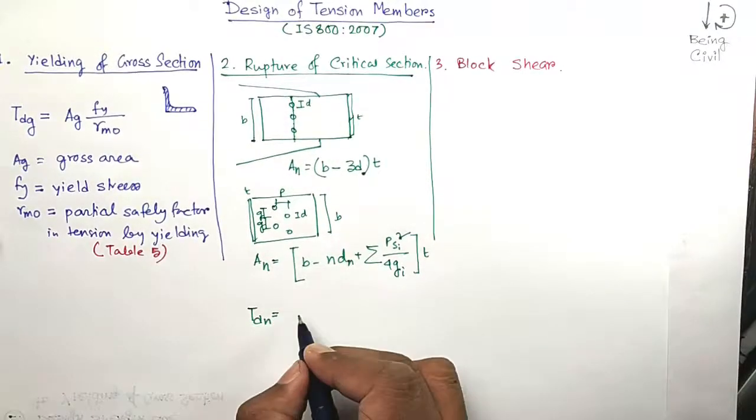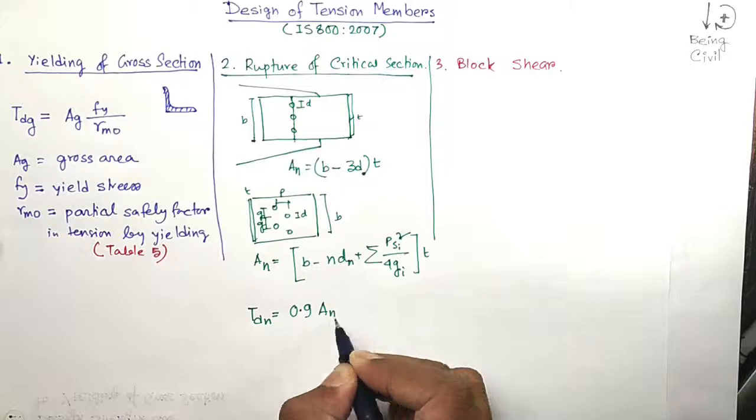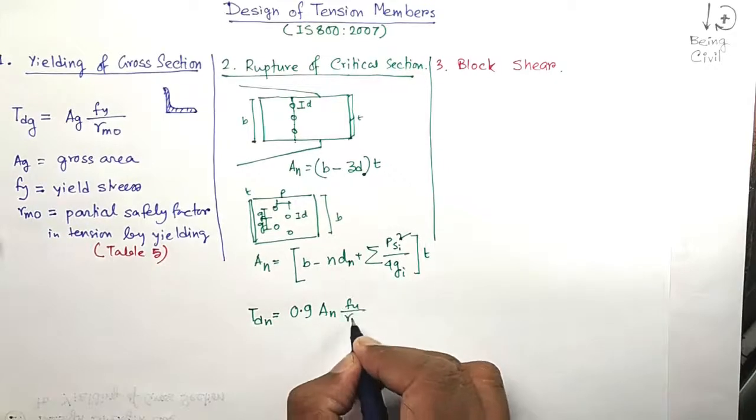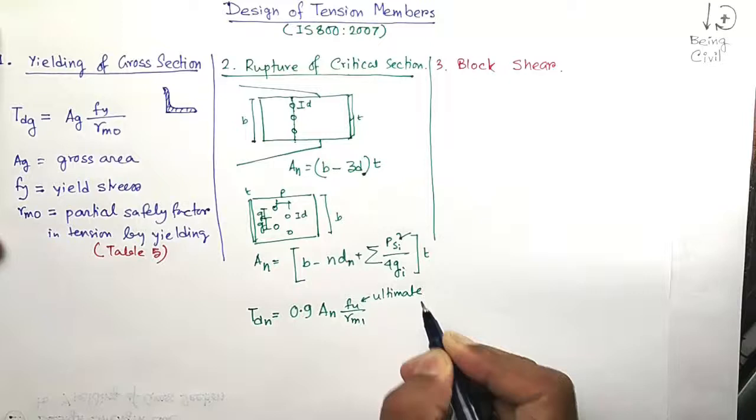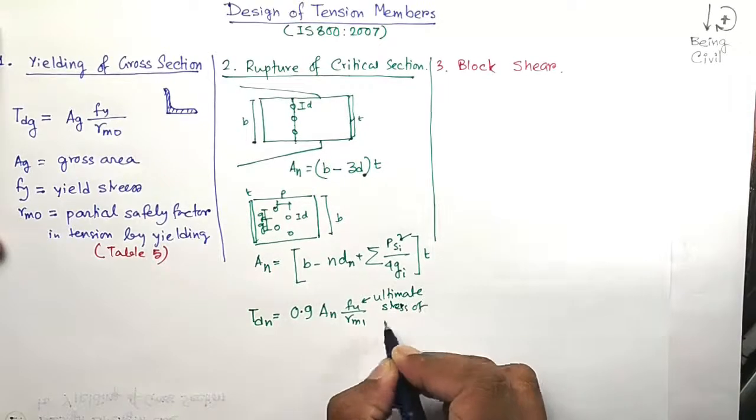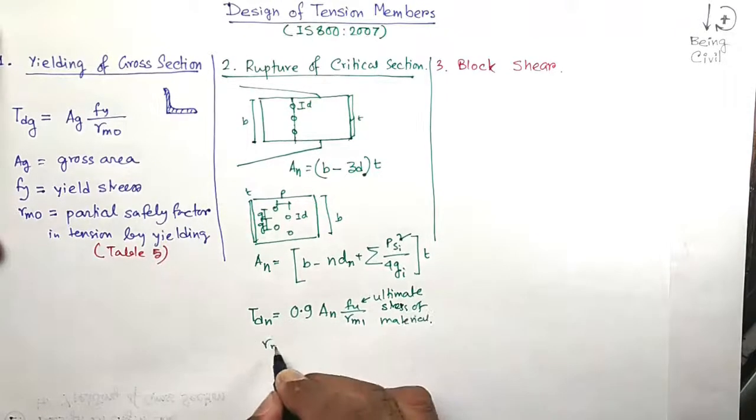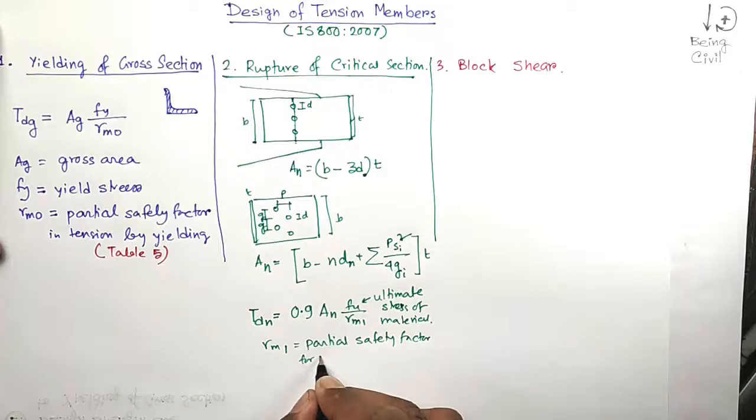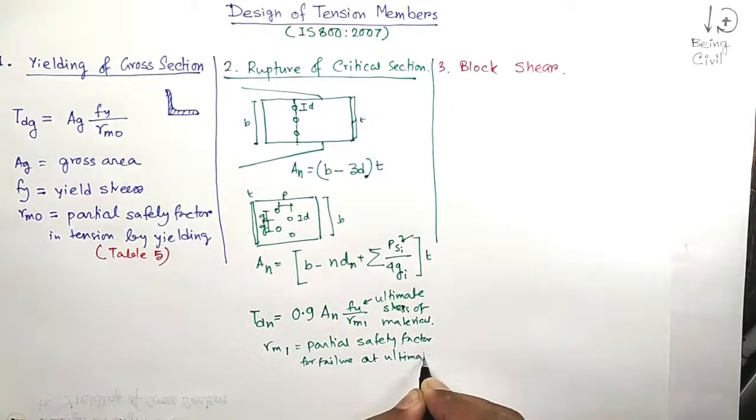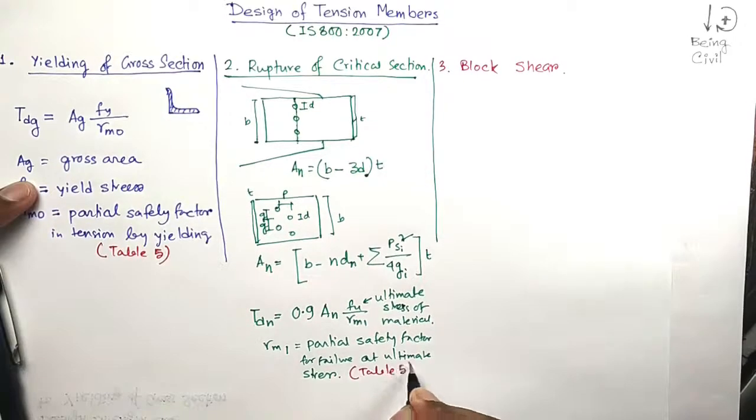Now, FU is the ultimate stress of material. γM1 is the partial safety factor for failure at ultimate stress, found in Table 5.